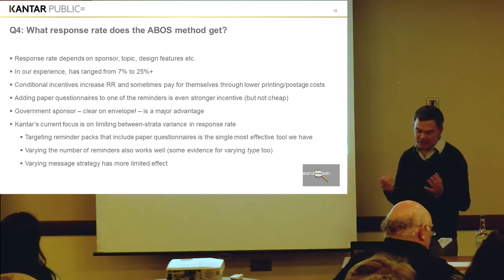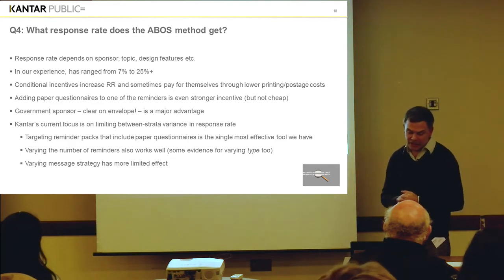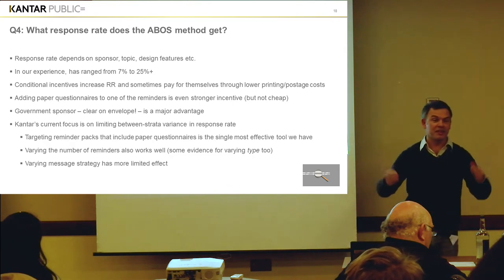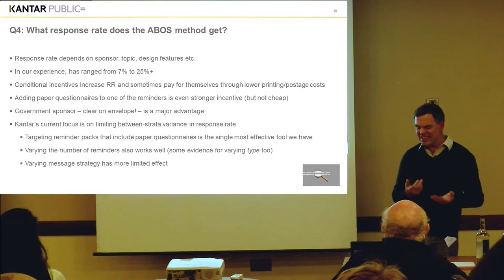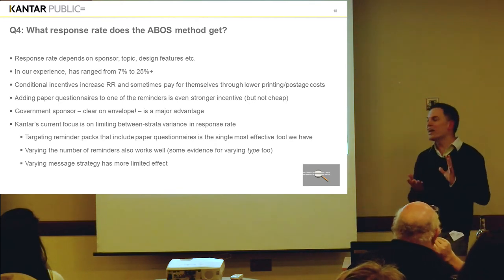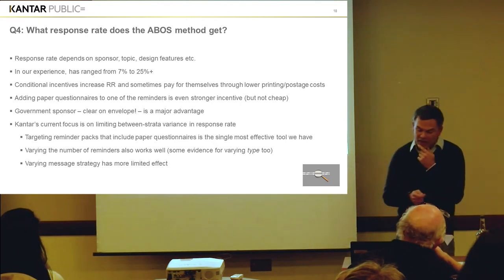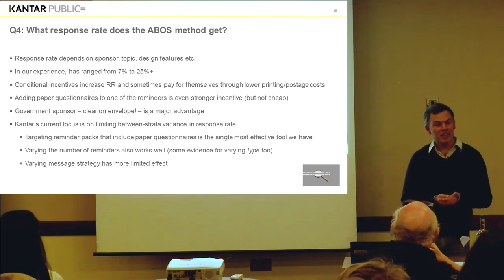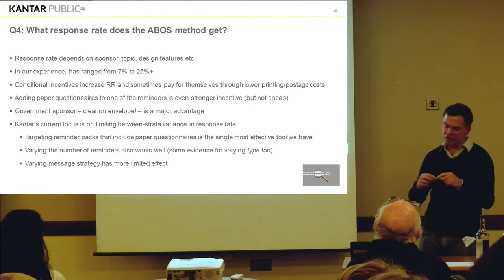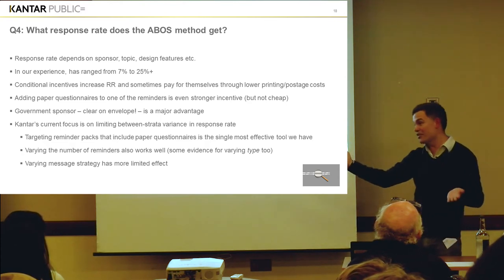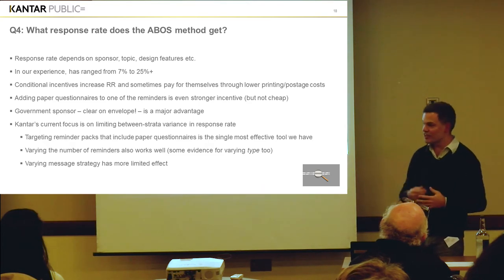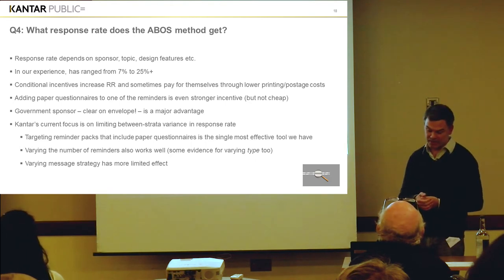Conditional incentives increase the response rate and they sometimes pay for themselves through lower printing and postage costs, because you don't have to sample a bigger number of addresses if your response rate is going to be higher. We tend to see about a 3-4% difference per £5 we put into the pot, but there is a bit of diminishing returns after that — £10 isn't quite double that, and £20 certainly isn't. ONS and we ourselves have tested unconditional incentives, which are very popular in America, but the cost of these when you're sending to all the addresses — when the response rate is actually quite low — means a small unconditional incentive costs about the same as a quite large conditional incentive. As expected in experiments, it doesn't usually beat the conditional incentive in terms of response rate per unit of expenditure.